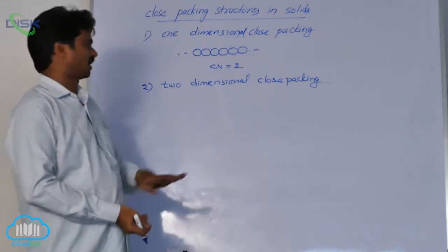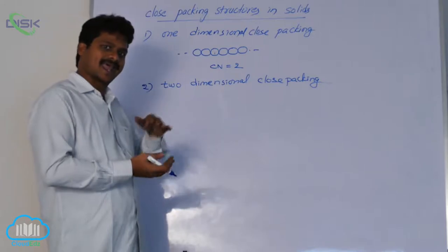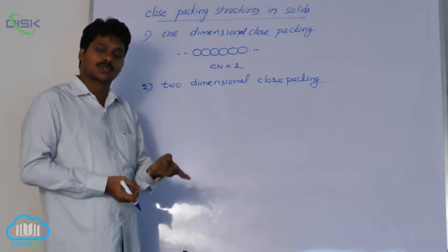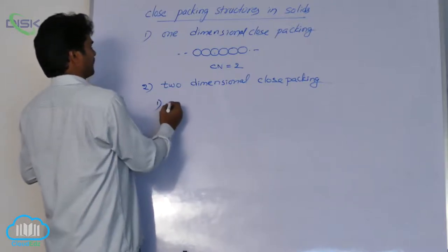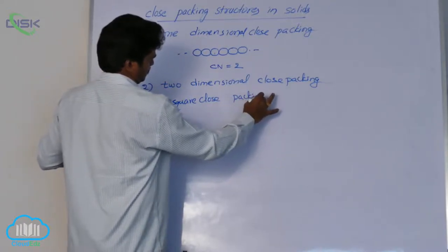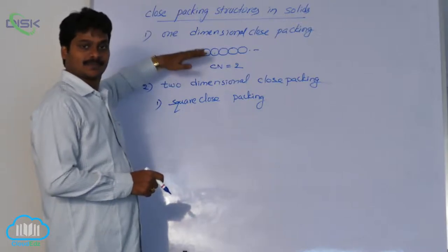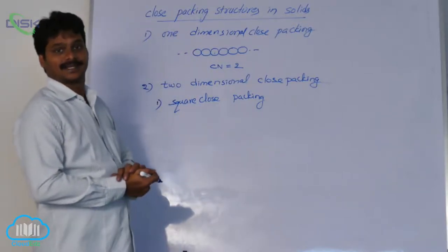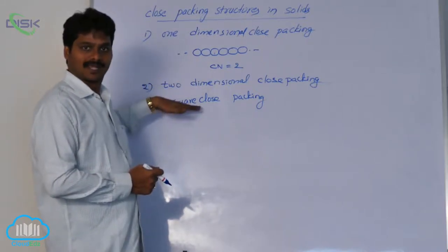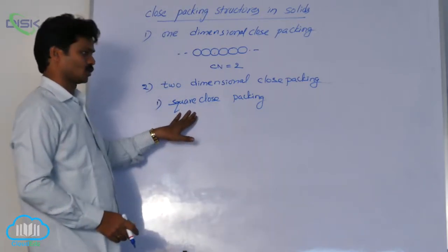Two-dimensional close packing is formed when a row of spheres is stacked one over the other. Two-dimensional close packings are of two types. The first one is square close packing. Square close packing is obtained when one row of spheres is placed over another layer such that the spheres are aligned horizontally and vertically.